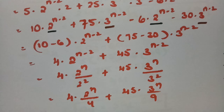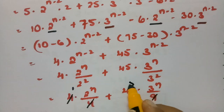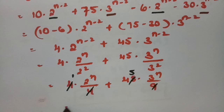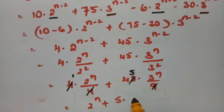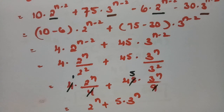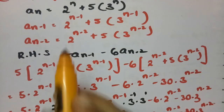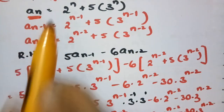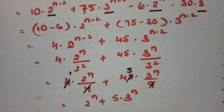Simplifying further: 4 times 2^{n-2} equals 4 times 2^n divided by 4, which is 2^n. And 45 times 3^{n-2} equals 45 times 3^n divided by 9, which is 5 times 3^n. So the result is 2^n plus 5 times 3^n, which equals a_n.